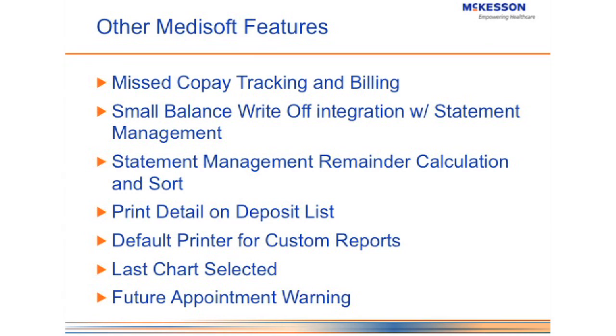There's an ability to select a default printer for custom reports, so you can send your statements to one location, your super bills to another, your claims to another — preventing you from accidentally printing a super bill onto a claim or a statement onto a super bill. It will allow you to specify that by tray, so you don't have to send to different printers. You can set it up so specific documents go to the tray that already has the correct paper loaded.